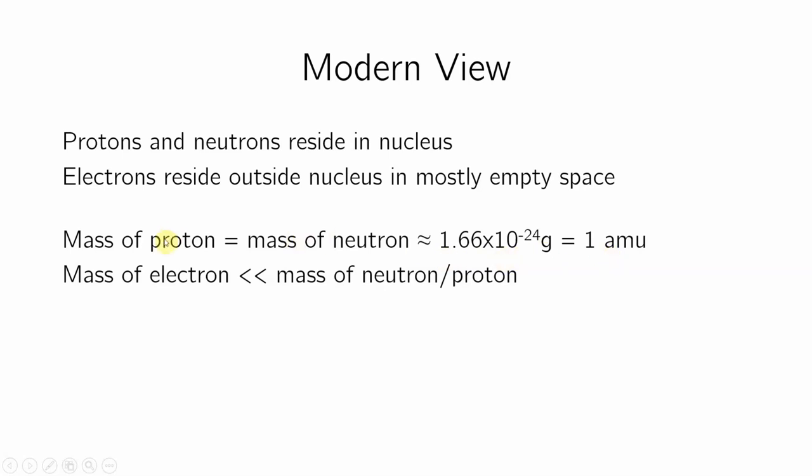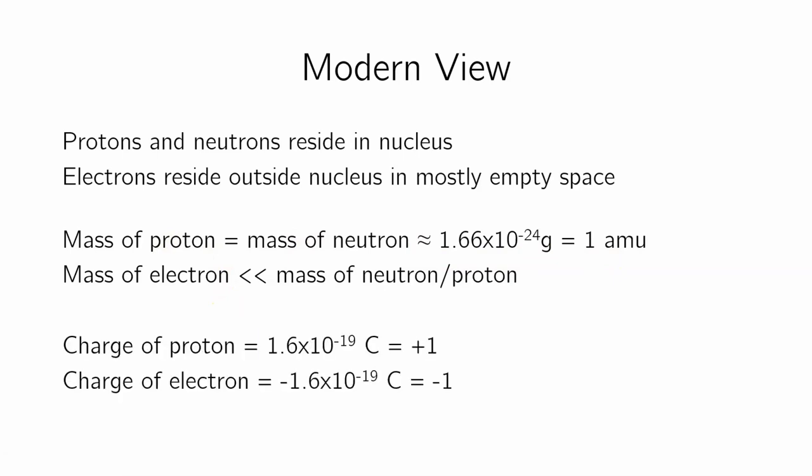And a neutron and a proton are the same mass. The mass of an electron is significantly smaller than the mass of a neutron or a proton. And so it's essentially massless. We just treat it as though it's zero.